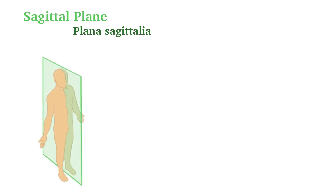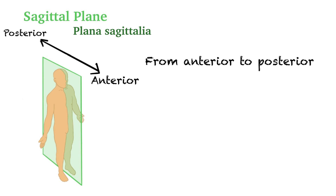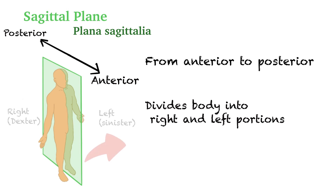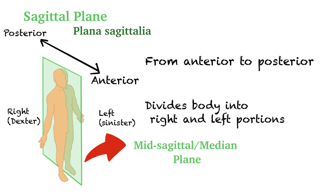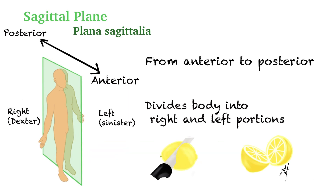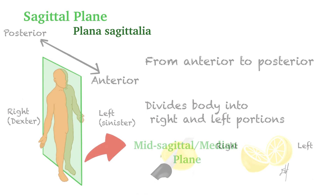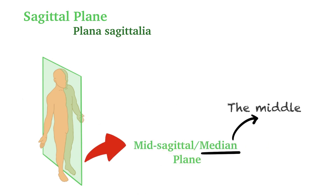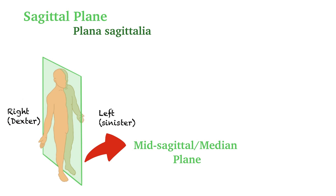The sagittal or lateral plane is also known as plana sagittalia in Latin. Sagitta means arrow. Imagine an arrow passing through your forehead — this plane passes through the body like a wide, flat, planar arrow, dividing the body into right and left parts. The sagittal plane is a vertical plane passing through your body from anterior to posterior, dividing the body into right and left portions. If this plane passes right through the middle, it is called the mid-sagittal or median plane. For example, slicing a lemon in the middle gives two equal right and left parts — this is the mid-sagittal or median plane. The word median means the middle, and it is a vertical plane that passes through the center of the body, dividing it into two equal right and left parts.